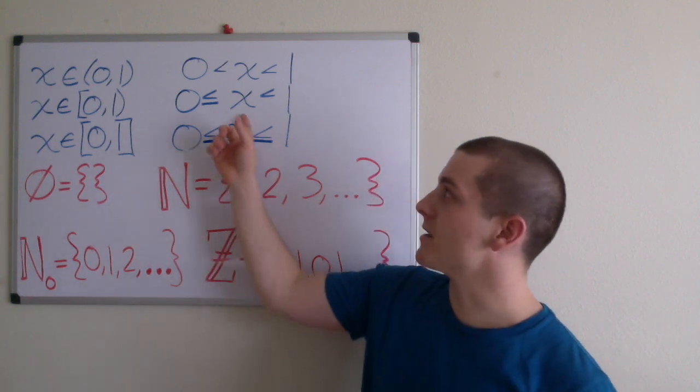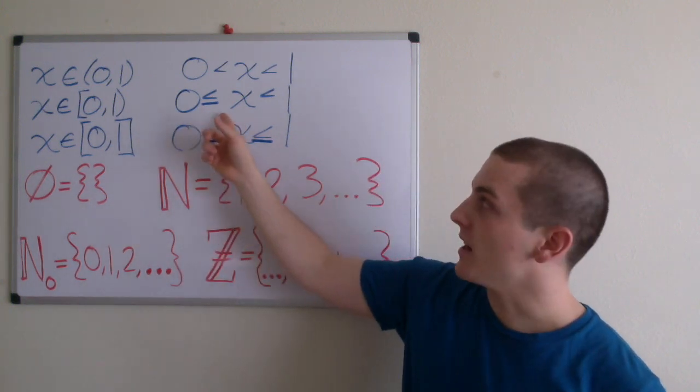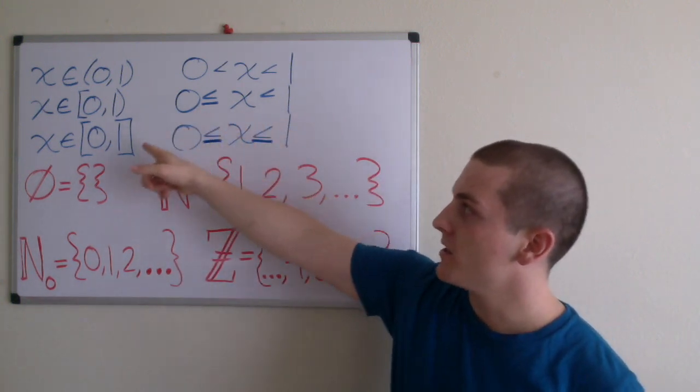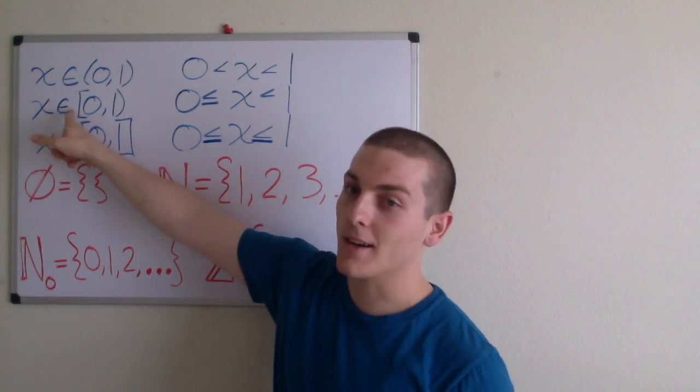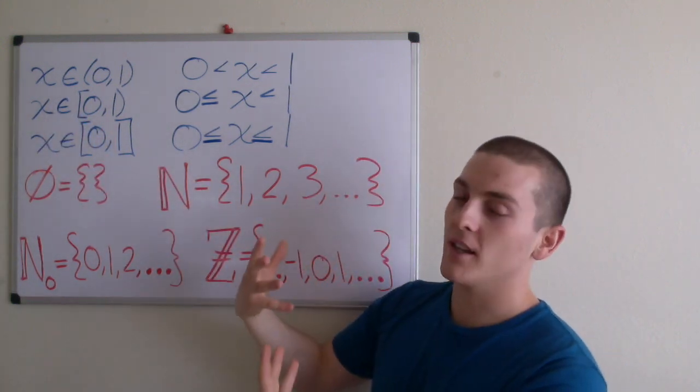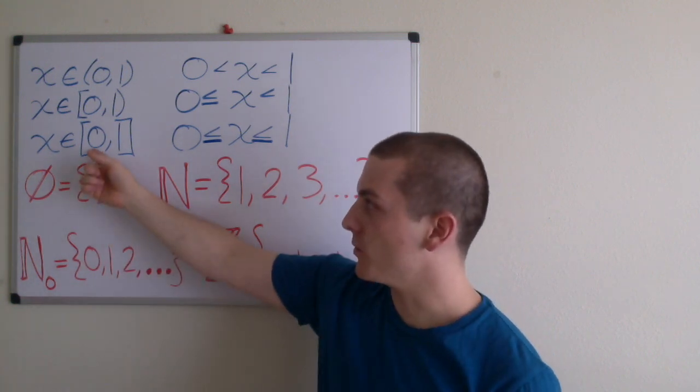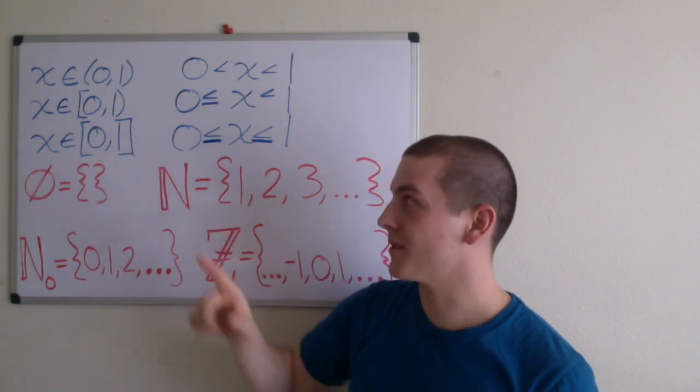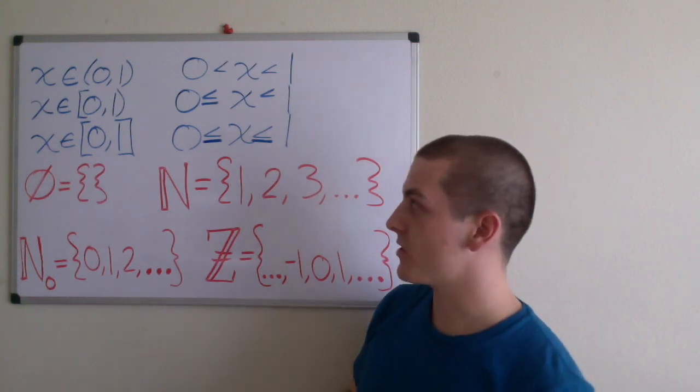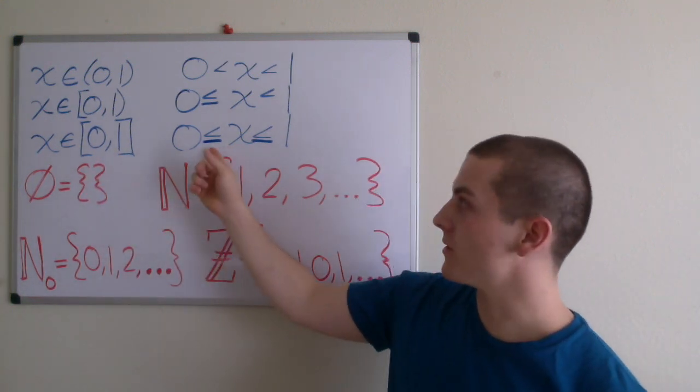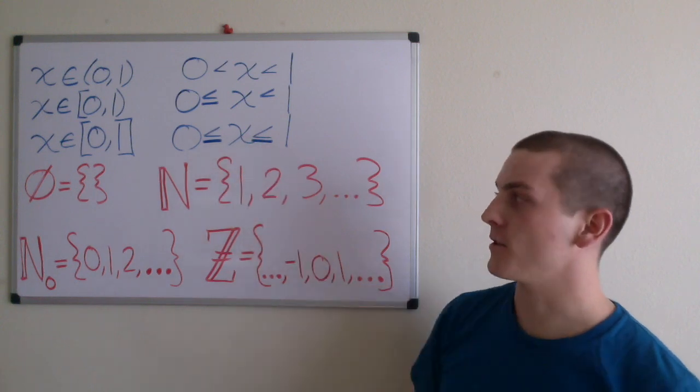Likewise, if we wanted to say that x is greater than or equal to 0 and x is less than 1, then we have to switch this to a square bracket. All we're doing is we are now including the number 0 in the interval. Also we can include 0 and we can also include 1 in the interval by using square brackets on both sides. So it's greater than or equal to and less than or equal to.